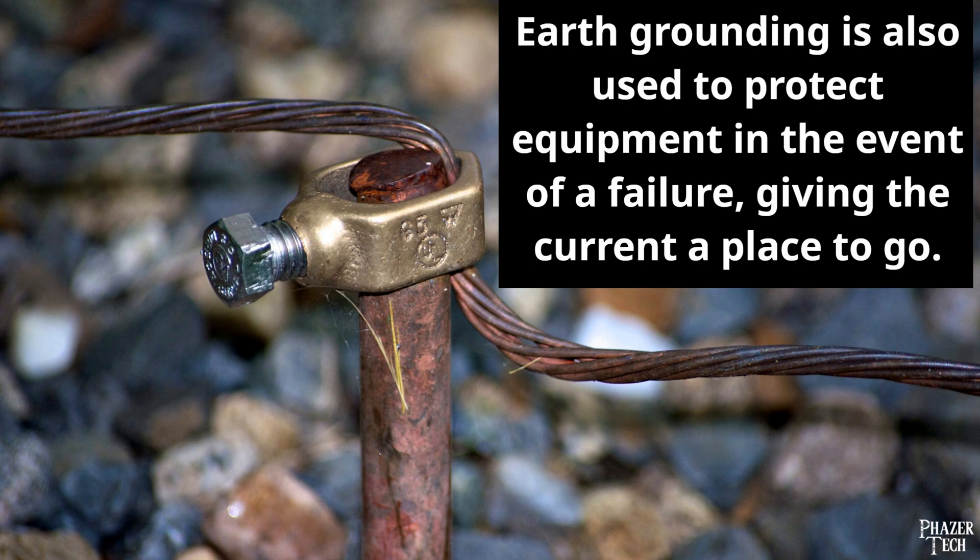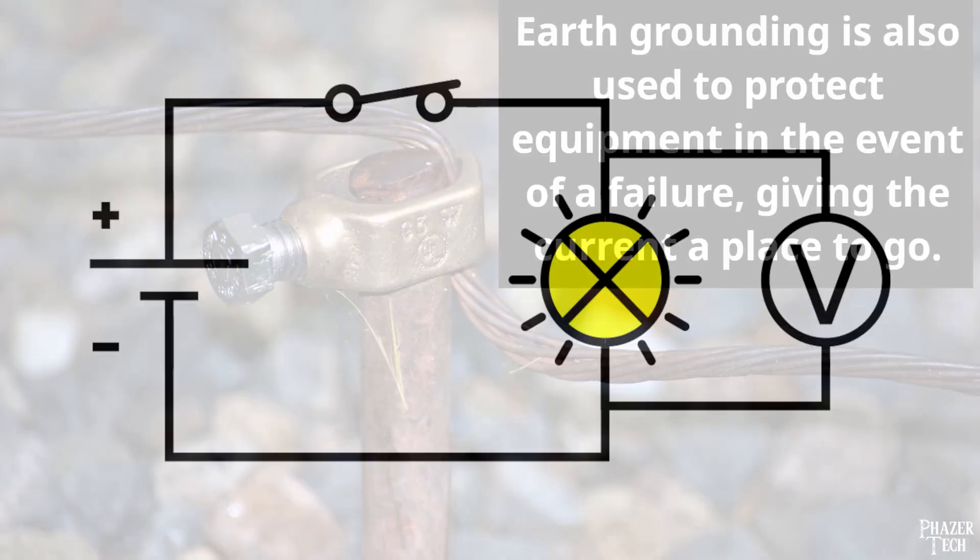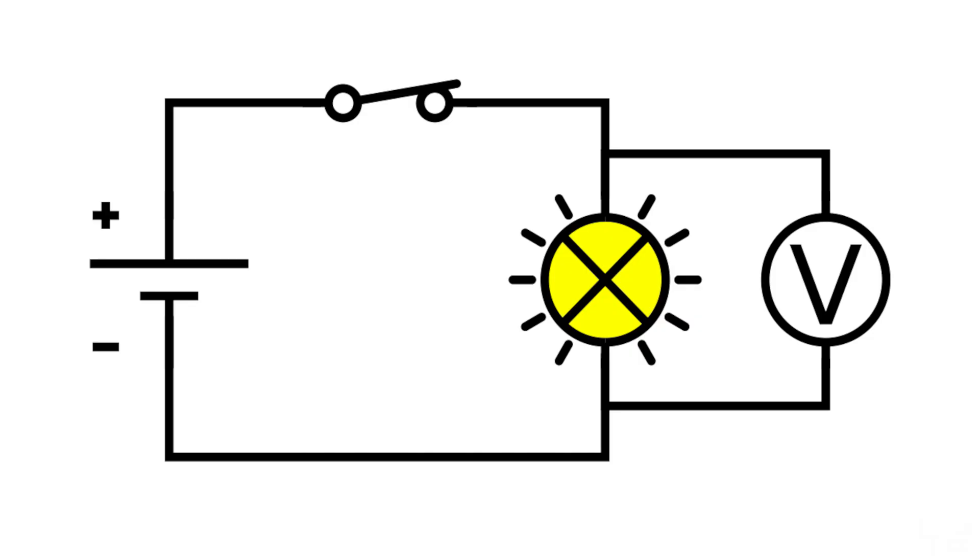In a DC circuit, the negative terminal is often tied to ground, but not always. Either way, the negative terminal is typically used as the reference point. The terms negative terminal and ground are sometimes used interchangeably. So if you hear someone say to connect a wire to the ground in a DC circuit, they probably mean the negative terminal. But it's important to remember that these aren't always the same thing.